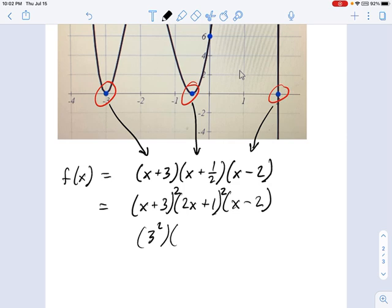times 1 squared times -2. That gives us a y-intercept of -18, which is totally wrong, right? We're supposed to get positive 6.